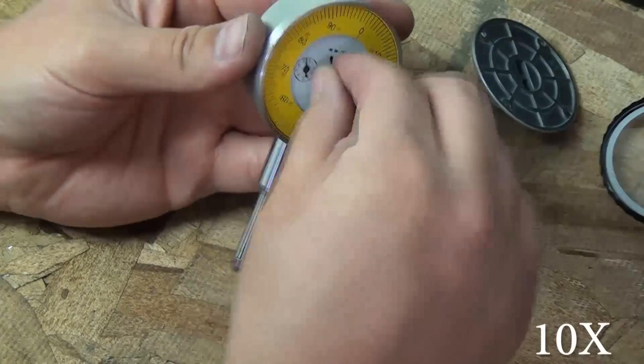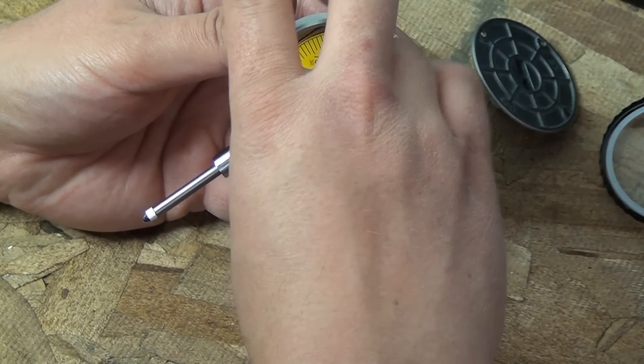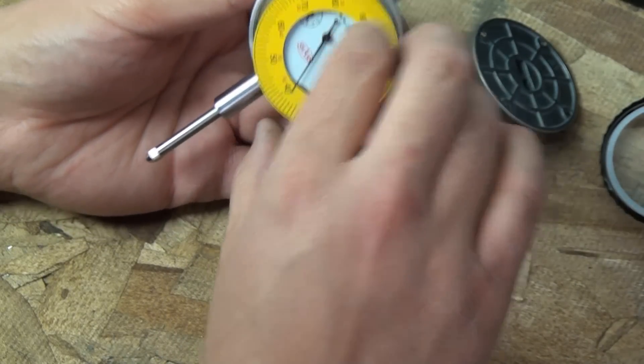I actually thought I was going to break the indicator getting it off but it did come apart, so I was pretty happy about that. And then the next thing is to remove this little dial ring.